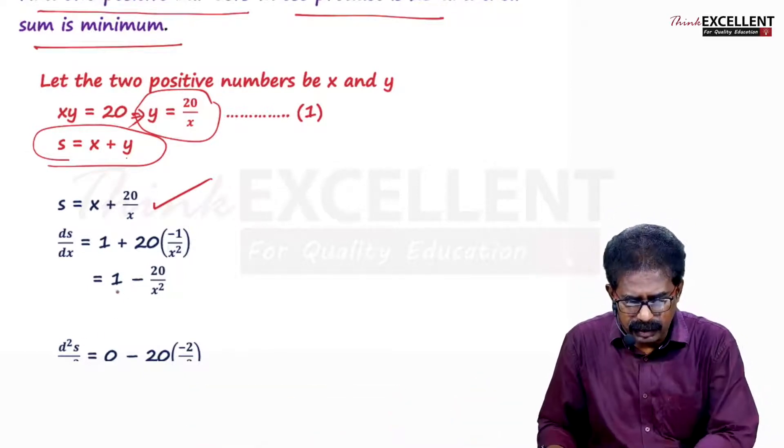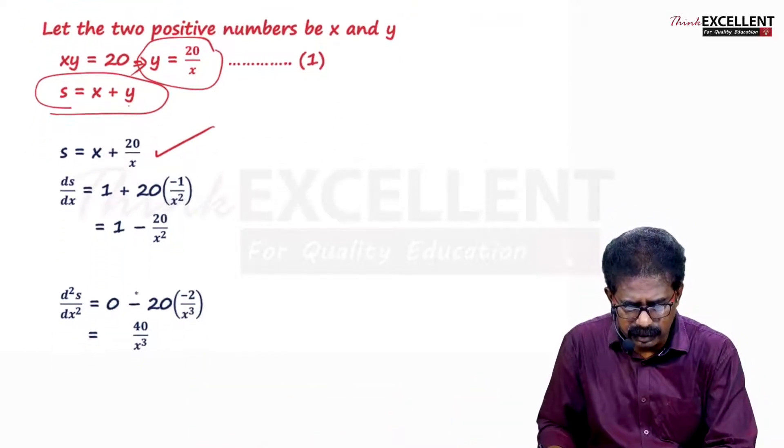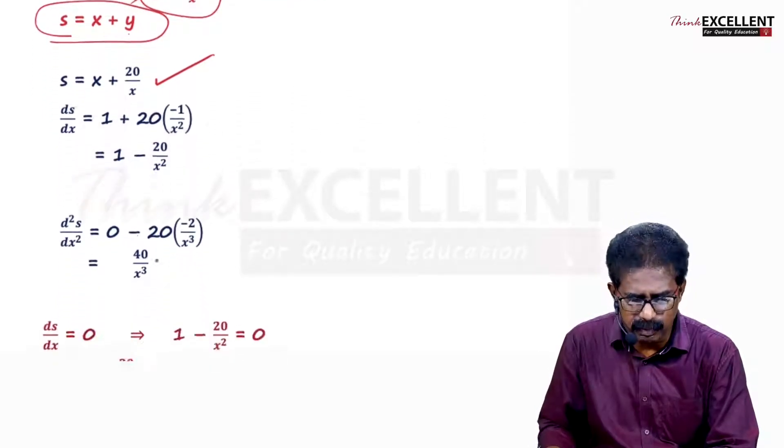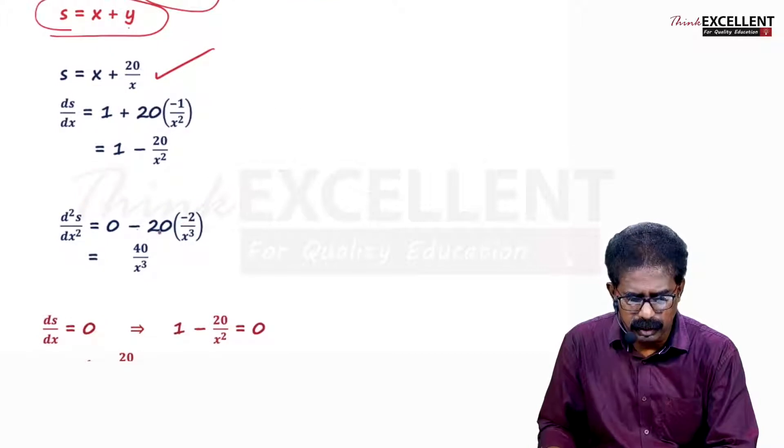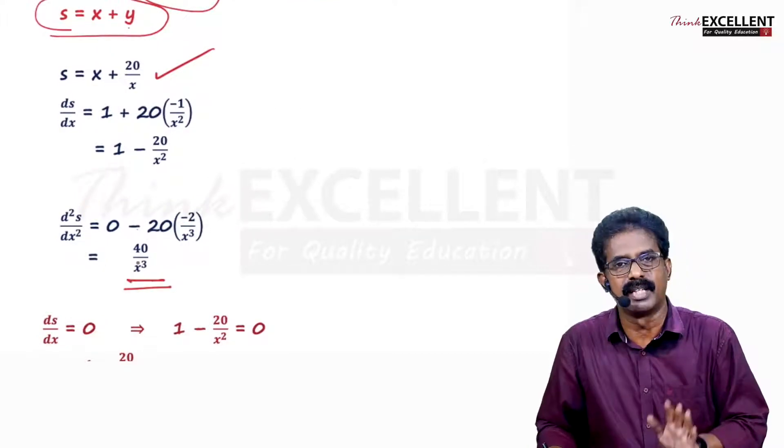Second derivative: 1 derivative is 0. Minus 20 constant. 1 by x square: minus 2 by x cube. If you simplify, minus into minus is plus. 20 into 2: 40 by x cube. You got second derivative.